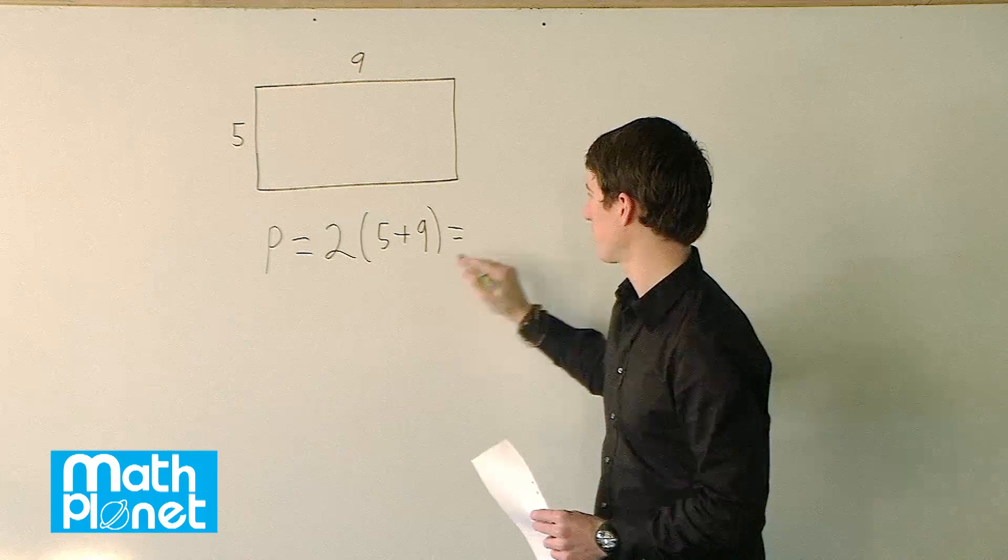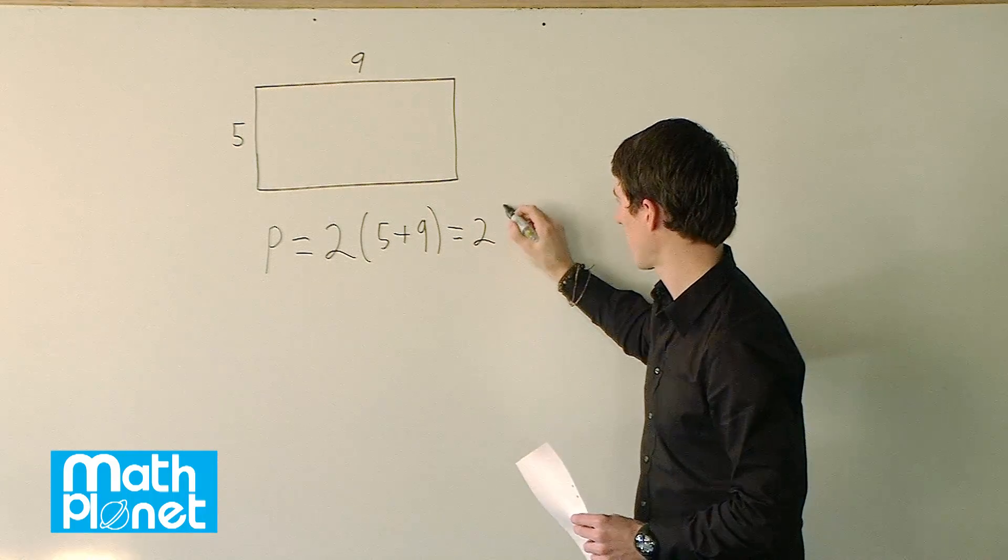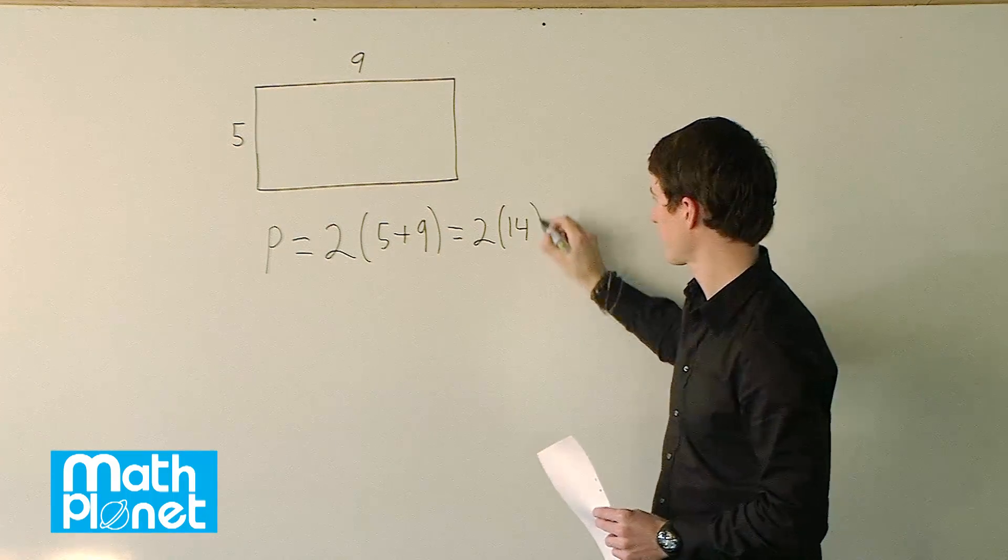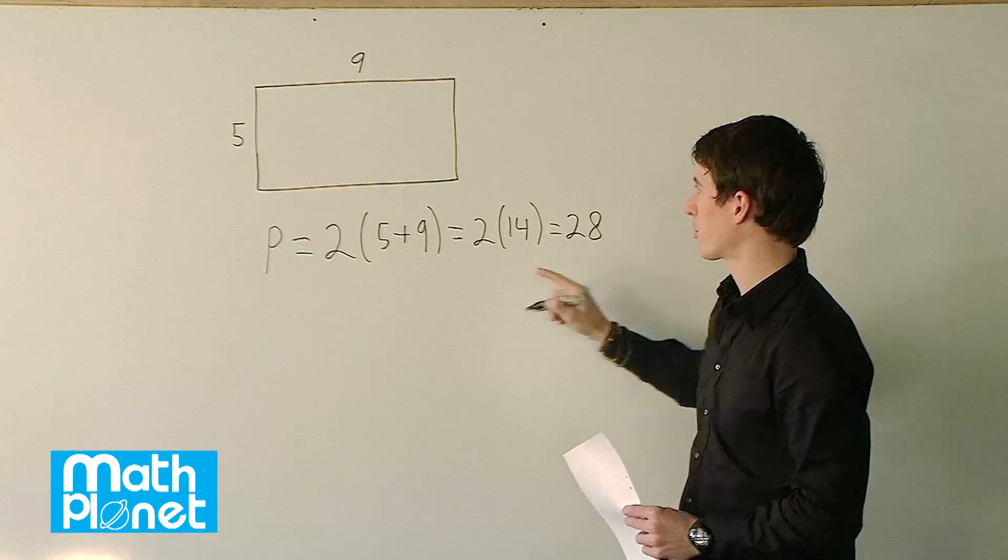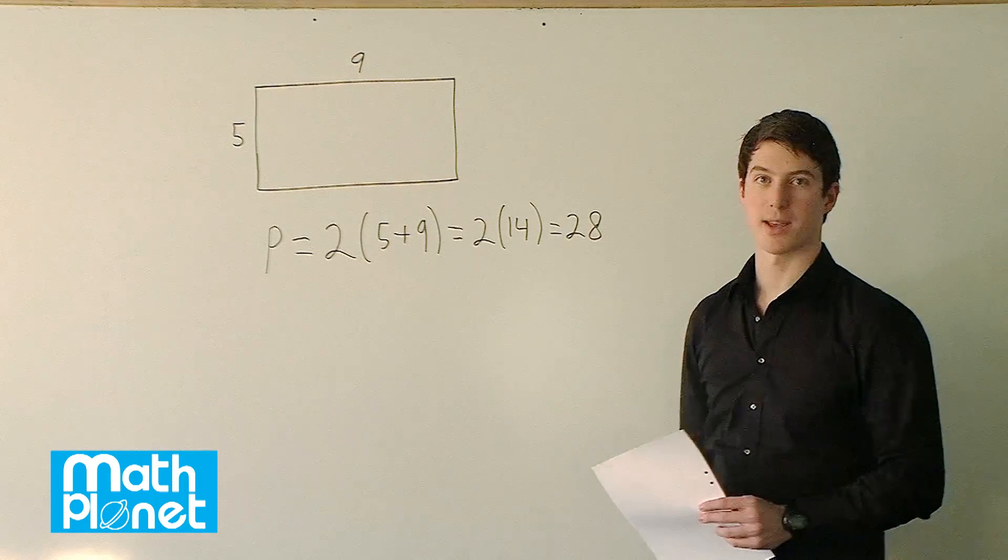So this becomes 5 plus 9 times 2, so 2 times 14, and 2 times 14 is of course just 28. So the perimeter or the sum of all the lengths here is 28.